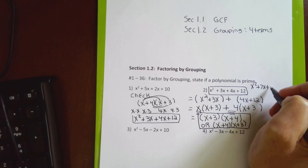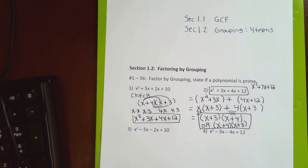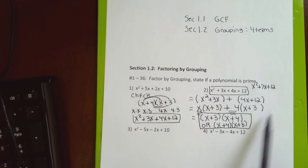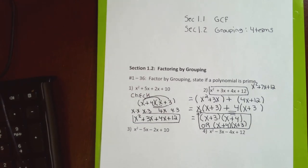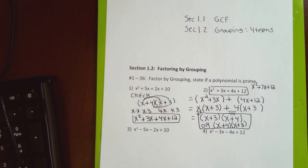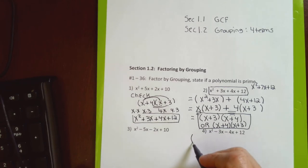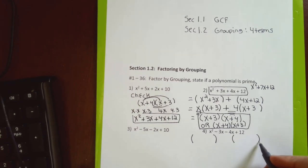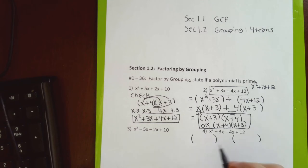I want to focus on the factoring by grouping strategy, so I'll avoid other approaches even though sometimes with four terms you can rewrite as three terms and factor differently. Anytime I have four terms, factoring by grouping is a strategy that works. There's only one trick in factoring by grouping, and it comes up in problem 4. I always introduce two parentheses, and I only use this technique if there are four terms.